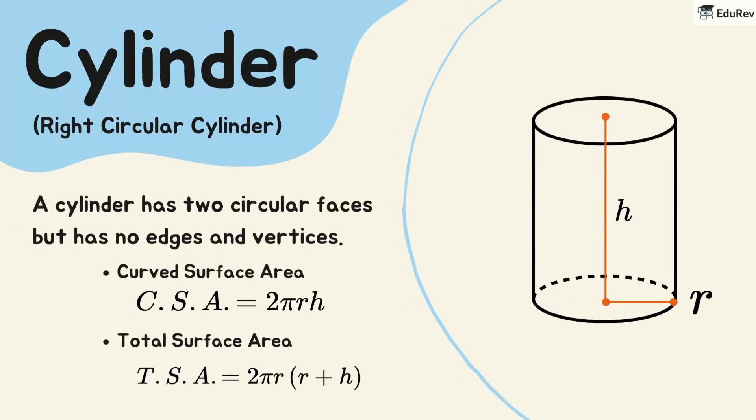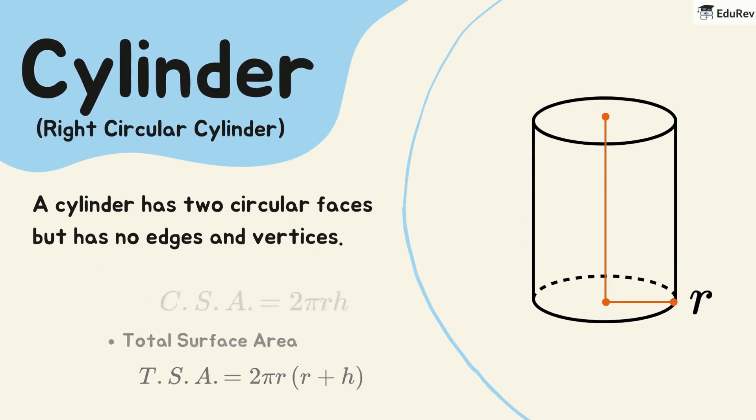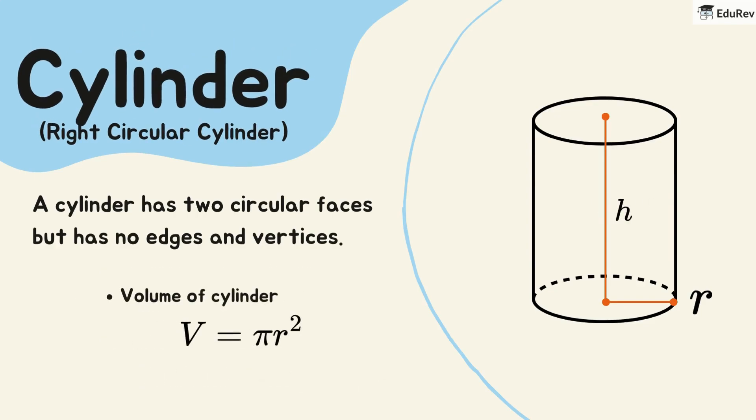Now, let's look at the cylinder. A cylinder has two circular faces but no edges or vertices. Its curved surface area is two times pi times the radius times the height. The total surface area is two times pi times the radius times the sum of the radius and height. The volume of a cylinder is pi times the square of the radius times the height.